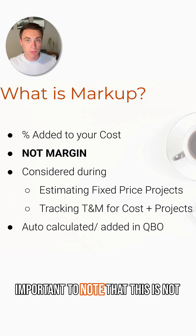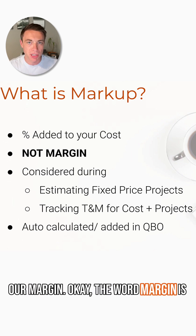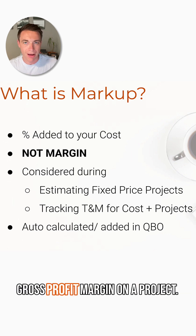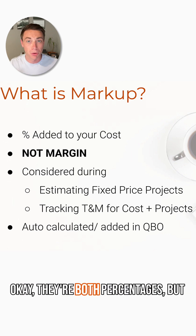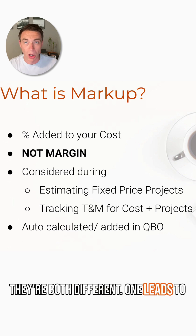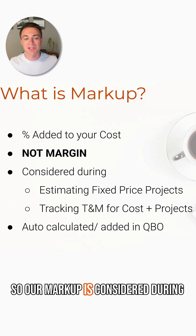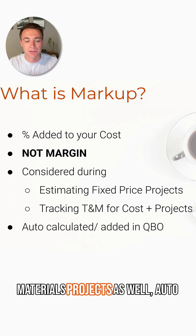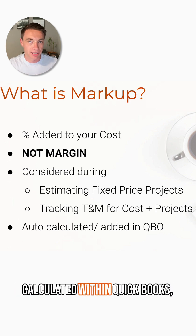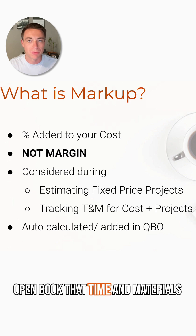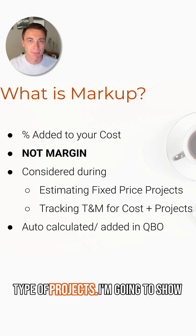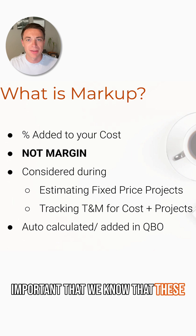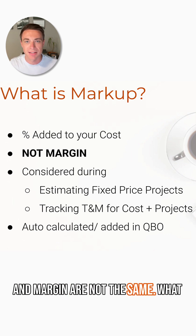It is important to note that this is not our margin. The word margin is commonly used to refer to your gross profit margin on a project. They're both percentages, but they're different. One leads to the other, but they're not the same. Our markup is considered during estimating our fixed-price projects, or of course tracking our time and materials projects as well — auto-calculated within QuickBooks, especially for that cost-plus, open book, time and materials type of project. Markup and margin are not the same.